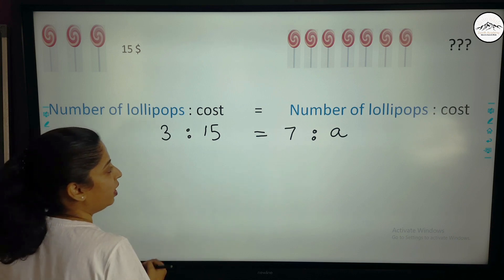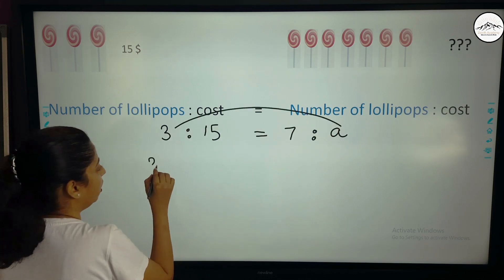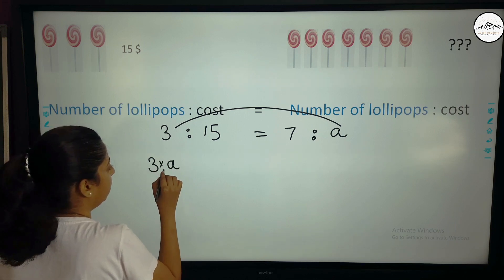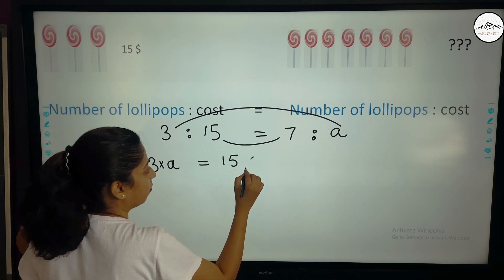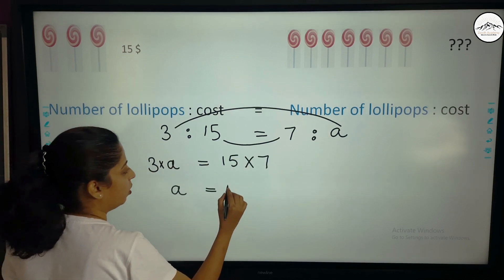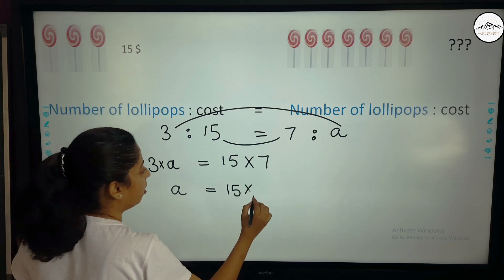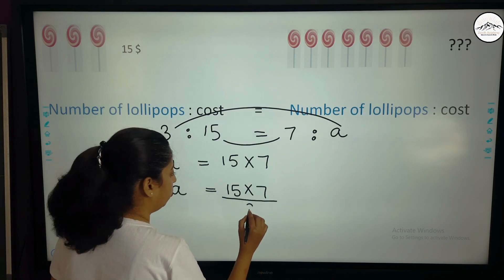So I have to find A basically. So now product of extreme is 3 into A. 3 into A is equal to product of mean that is 15 into 7. Then simply find A. So A will be equal to 15 times 7. Now here this is multiplied. So when it comes here it becomes division. So into 3.